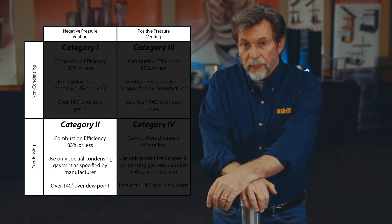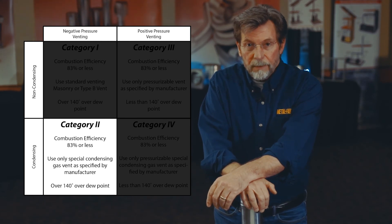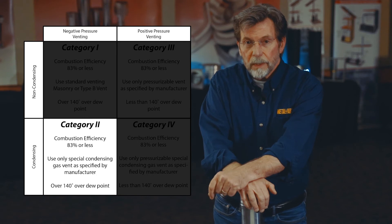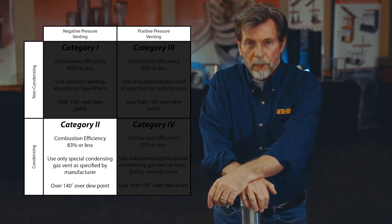In category two appliances, the pressure inside the vent when the appliance is running is going to be slightly negative. The products of combustion as they exit the appliance are going to be less than 140 degrees above dew point, so there's a potential for those vent gases to condense before they get to the cap, leaving moisture — liquid — inside the vent system. That liquid is going to be slightly acidic, so not only do you need a sealed vent system, you're going to need a material that is proven to be corrosion resistant.